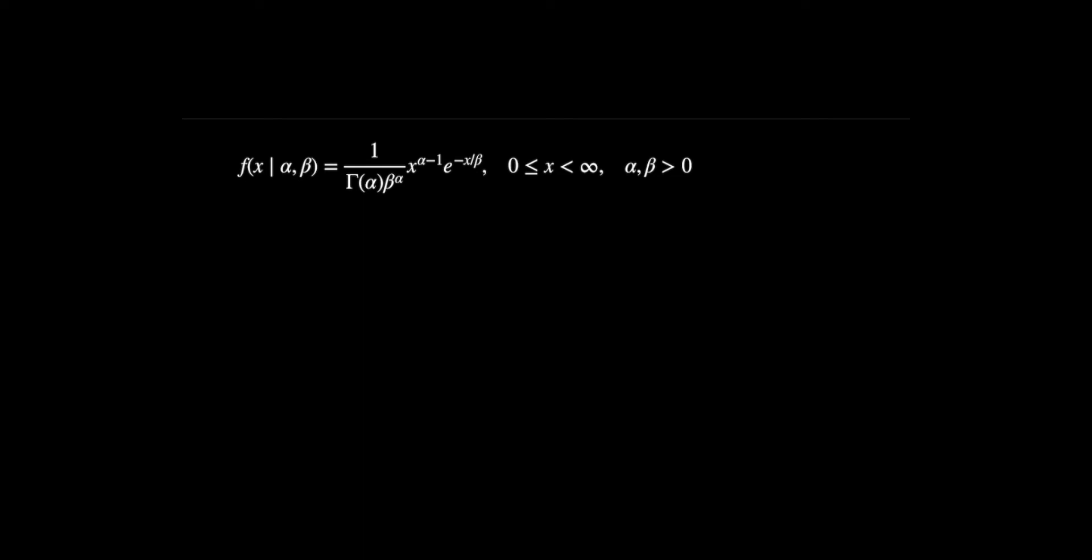Our goal is to get it into the form on the previous page. The first thing we note is that this term here is already a function of the parameters alpha and beta, so we're going to say for right now that this here is our C of theta. But now the problem is that